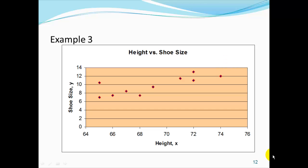Our goal with simple linear regression is to find the equation that best describes the relationship between our x and our y variable. More specifically, we want the equation of the line that, when drawn through these data pairs, places the line as close as possible to the data pairs overall.